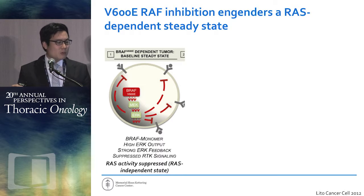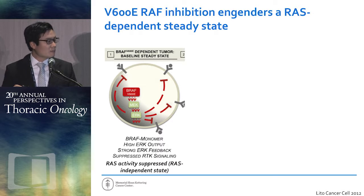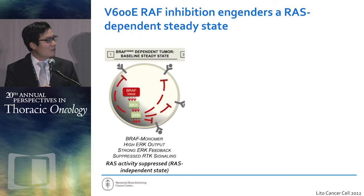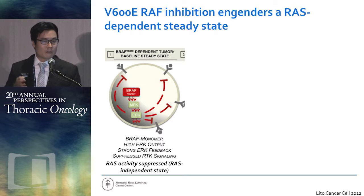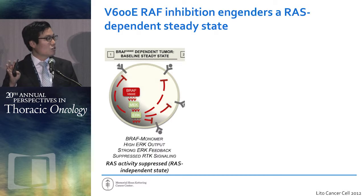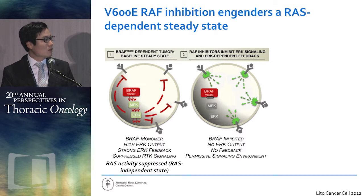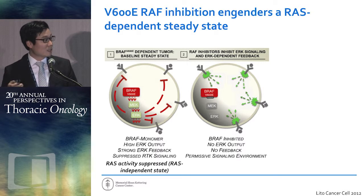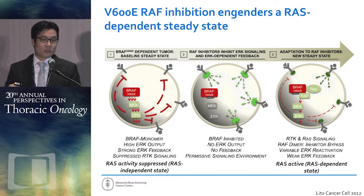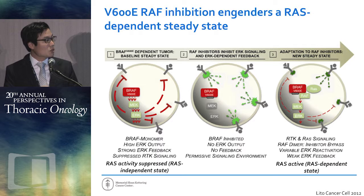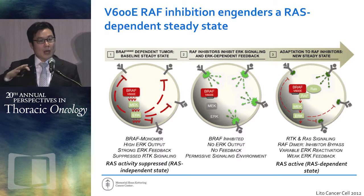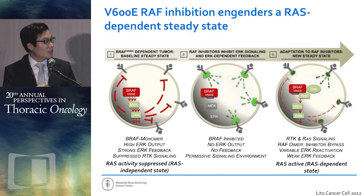A lot of basic science work over the past five years has tried to tease apart why this is the case. The most important discovery came from Neil Rosen's lab — when you have BRAF V600E, you get constitutive activation of the MAP kinase pathway, and ERK exerts negative feedback regulation of receptor tyrosine kinases, shutting down downstream RTK signaling. When you inhibit BRAF V600E, you shut down ERK signaling, which relieves that negative feedback, allowing RTK signaling to resume through RAS and recruitment of alternative RAF isoforms such as CRAF, leading to a bypass pathway that essentially circumvents BRAF suppression.